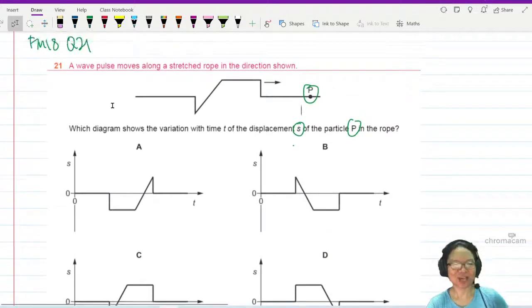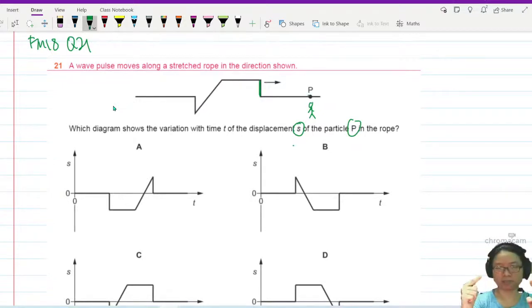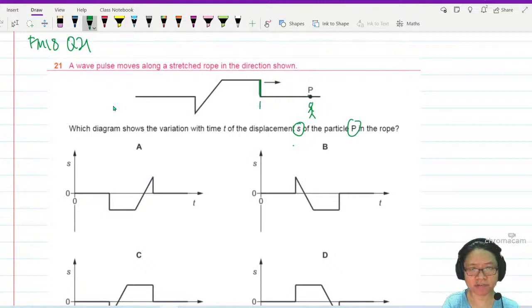Okay, let's look at P. Imagine you are P, imagine you are here, standing here. The first wave portion that you will encounter is this part. This is the first part that you will encounter. So the first thing that P will experience is an upward displacement. So this is first, this one.